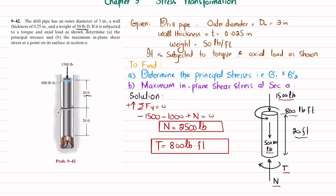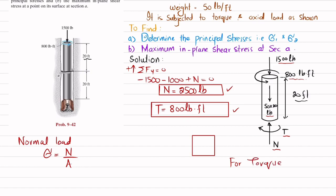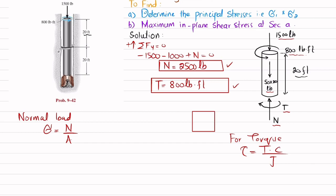We now have a normal axial load and a torque. Drawing the stress element: due to the normal load we have normal stress σ = N/A, and due to the torque we have shear stress τ = TC/J, where T is the torque, C is the radius, and J is the polar moment of inertia. We will now calculate these values.